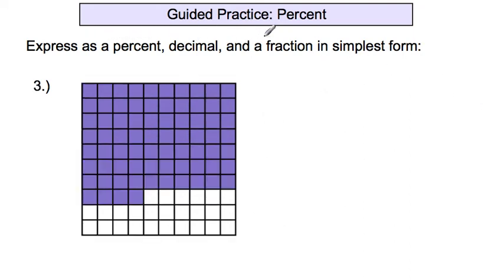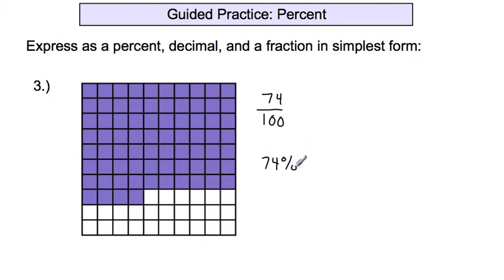Number three: expressing as a percent, decimal, and fraction. Counting the shaded squares: seven rows of 10 plus four more equals 74 out of 100. That is written as 74 percent, and as a decimal it's 0.74 — that's 74 hundredths. This is not in simplest form; the greatest common factor is 2, so 74 over 100 reduces to 37 over 50.